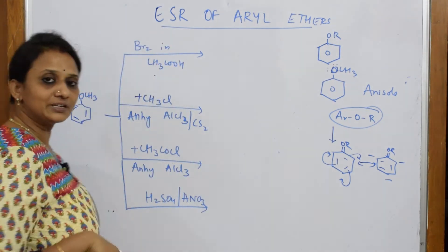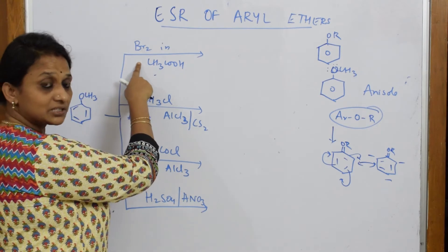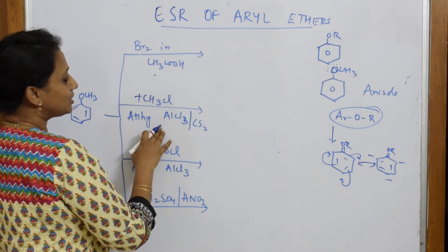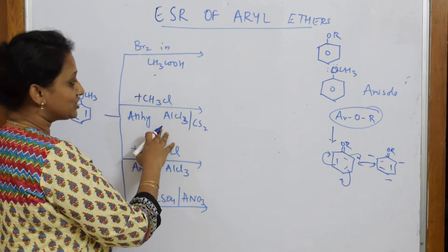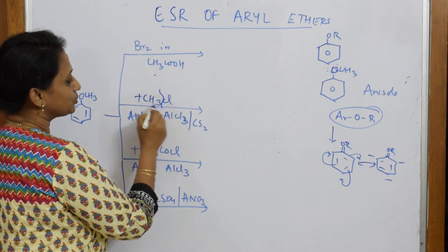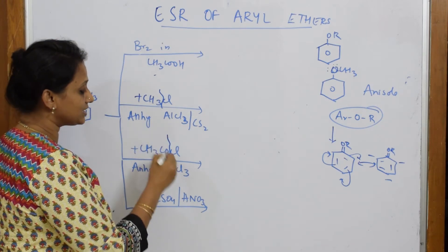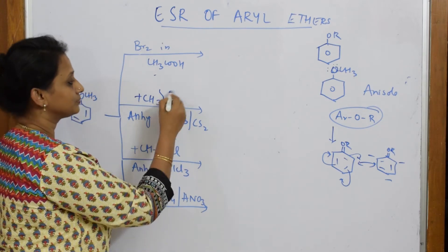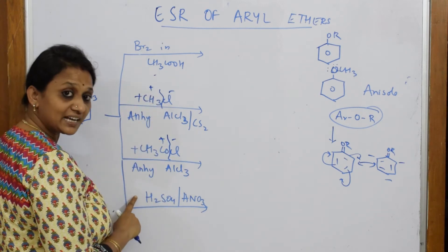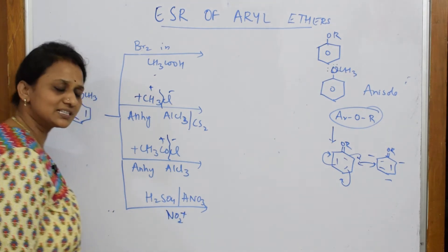These are all electrophilic substitution reactions. Bromination is where the electrophile is Br. Friedel-Crafts alkylation is where the electrophile is a methyl group. Friedel-Crafts acylation is where the electrophile is an acyl group. Nitration is where your electrophile is NO2+.